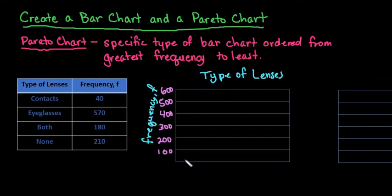So for the contacts I have 40 so I would go less than halfway up. And so this would be my contacts. And then I would label down here contacts. And like I said you do want to have a gap. So for eyeglasses we would start here and then 570 would probably be about right here. I'm just eyeballing it. A lot of times it's better to do computer software. They're going to give you a much better display. They're much better at drawing. So this would be eyeglasses.